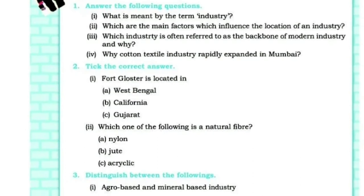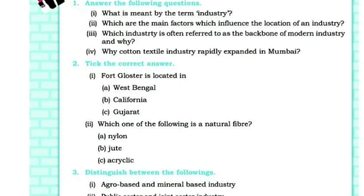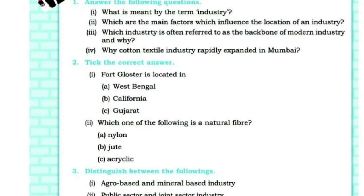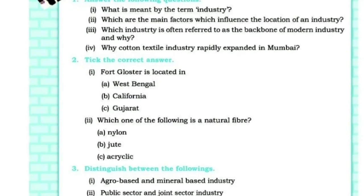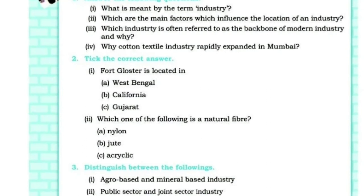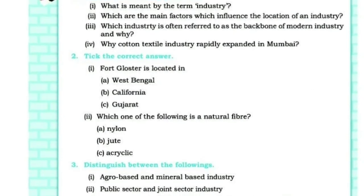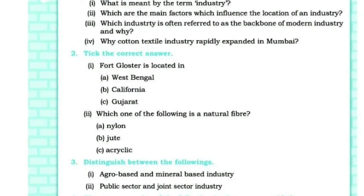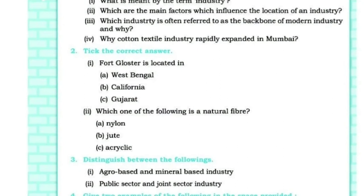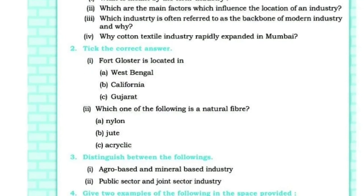Why did the cotton textile industry rapidly expand in Mumbai? The warm and moist climate, proximity to the port, availability of raw material, and skilled labor helped in the rapid expansion of the cotton textile industry in Mumbai. Similarities between the IT industry in Bangalore and California include presence of high-quality educational institutions, advanced scientific and technological centers, pleasant climate, clean environment, good quality skilled workforce, access to markets, and well-developed connectivity.